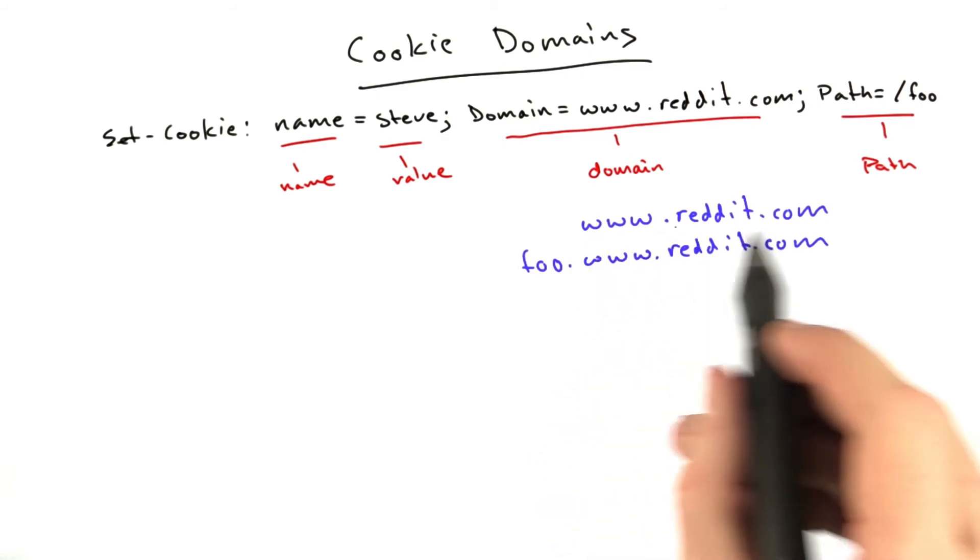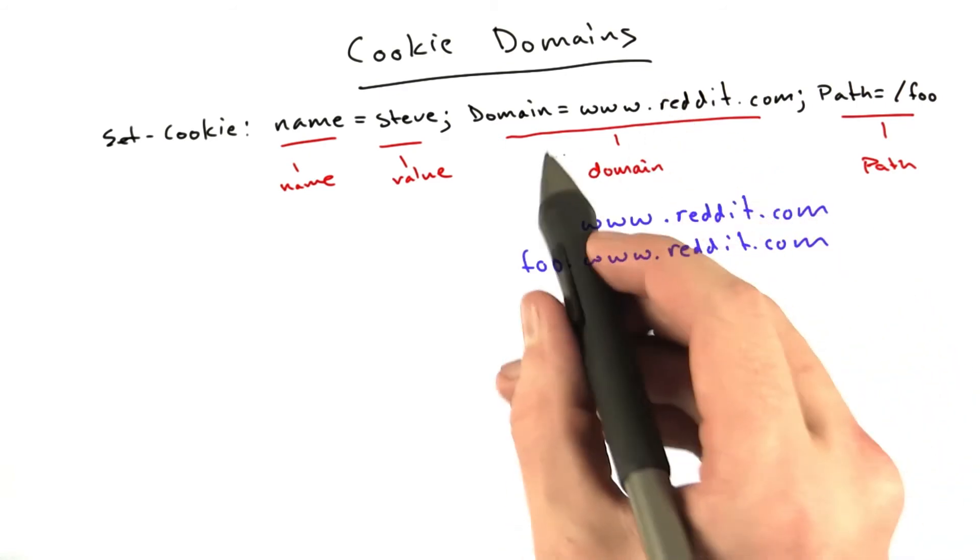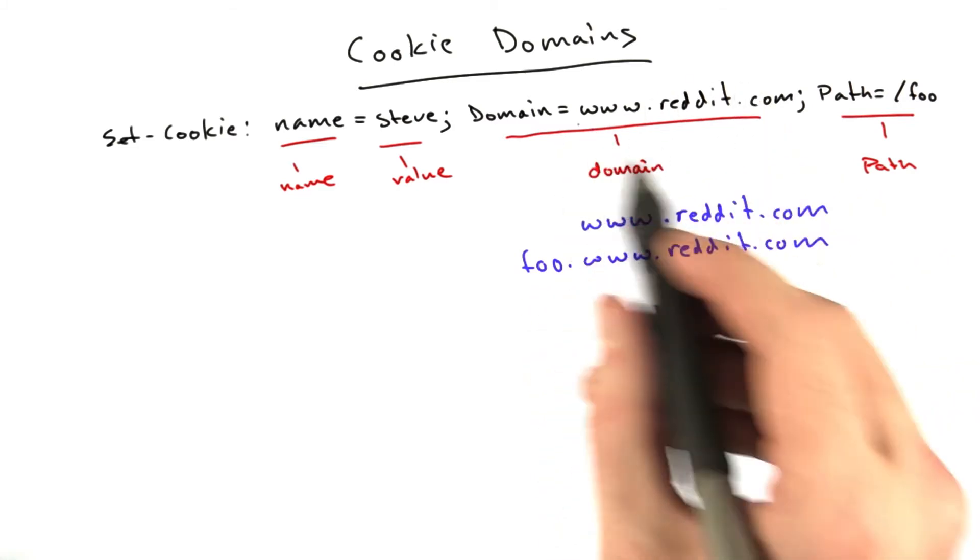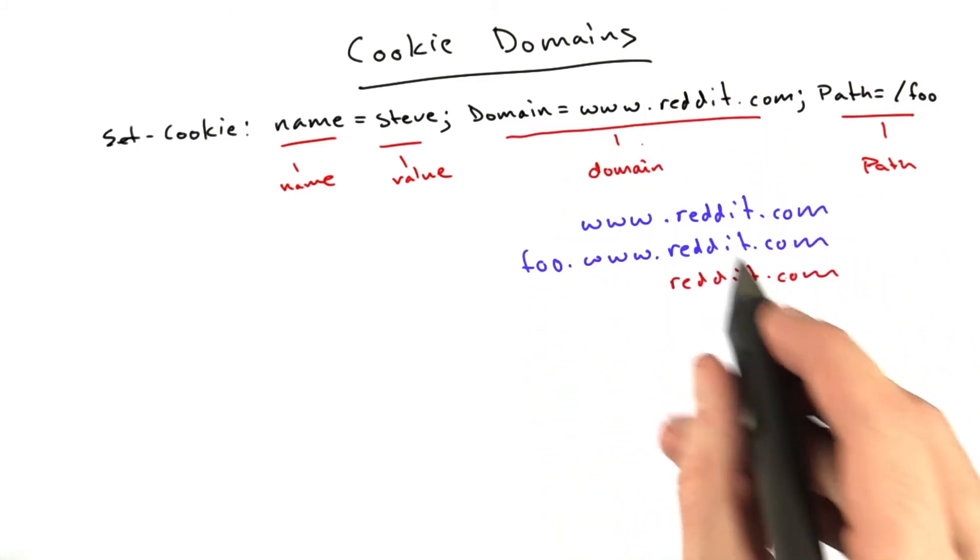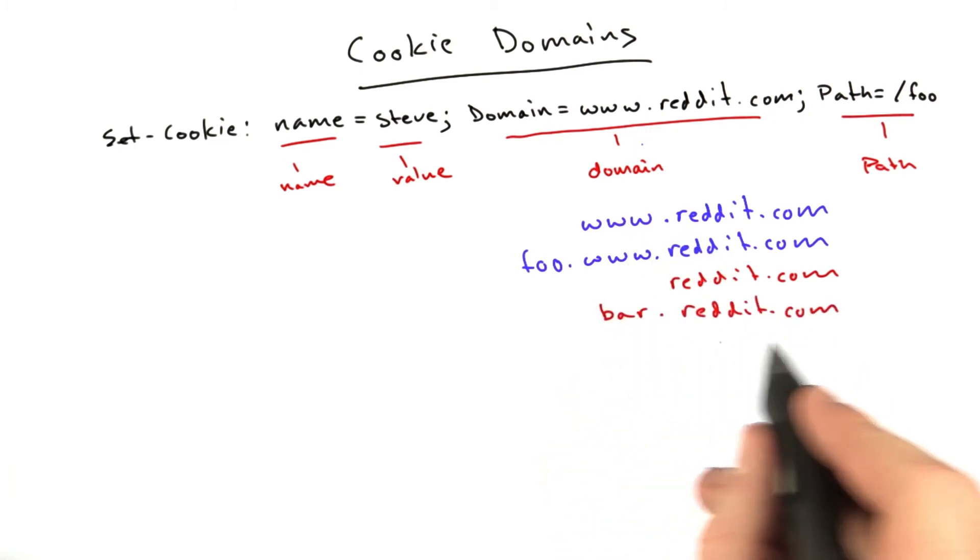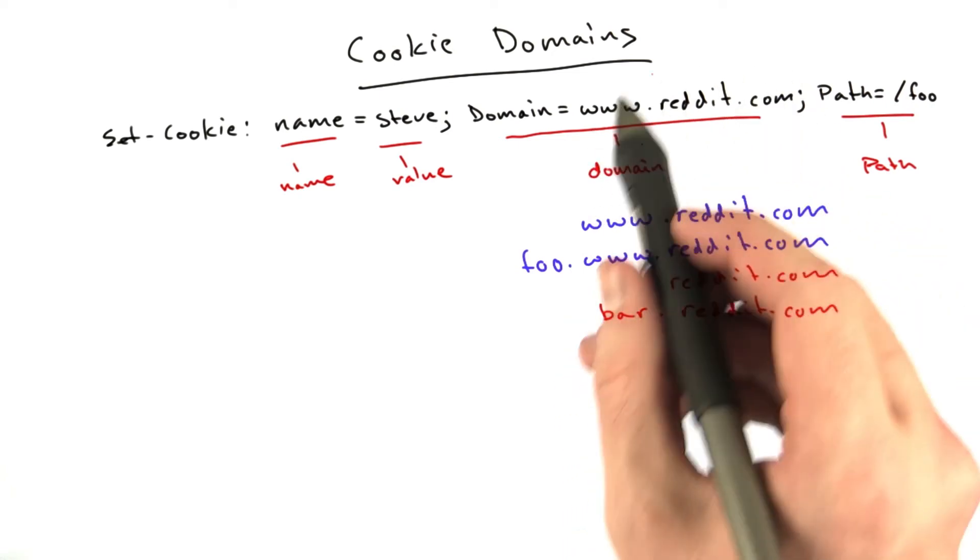So domains that this works for are, for example, www.reddit.com, foo.www.reddit.com. Domains that will not receive this cookie would be, for example, just reddit.com without the www, or bar.reddit.com, because this cookie was restricted to www.